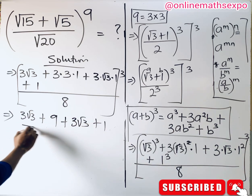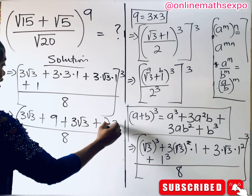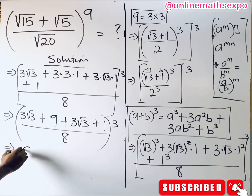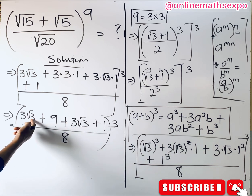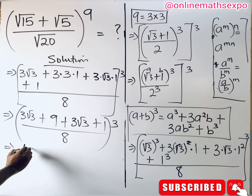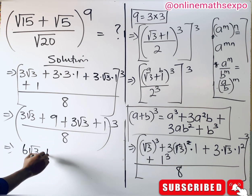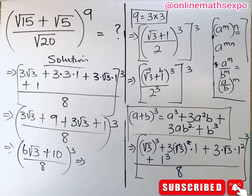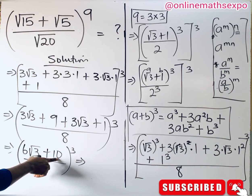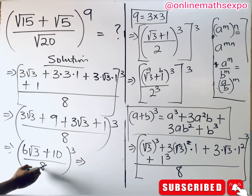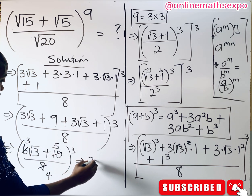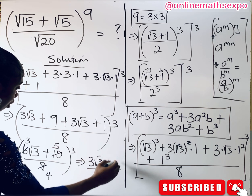Collect like terms: 3√3 + 3√3 = 6√3, and 9 + 1 = 10. So the numerator becomes 6√3 + 10, divided by 8. We can divide by 2: this gives (3√3 + 5) / 4. So the inner bracket simplifies to (3√3 + 5) / 4.